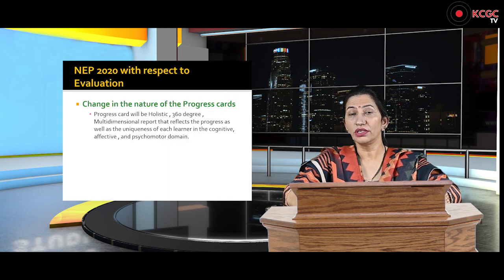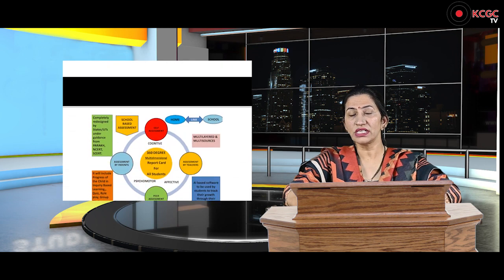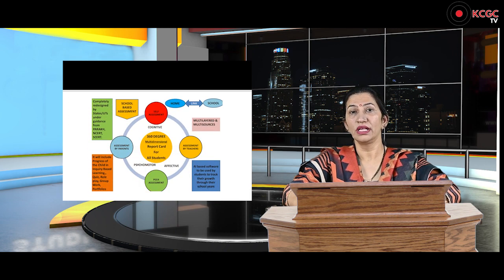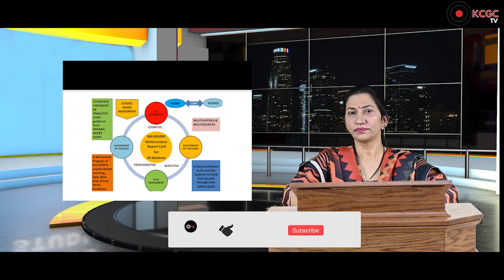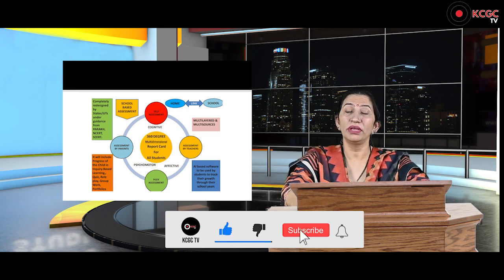Now the government has proposed that evaluation should be done at a multi-level — covering the psychomotor domain, cognitive domain, and affective domain. It should be done by different stakeholders. The very first is the student themselves — self-appraisal will be done by the student. The second evaluation will be done by the peer group. The third will be done by teachers, and the fourth by parents.